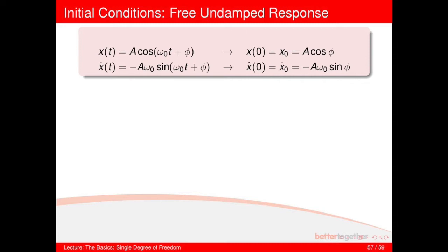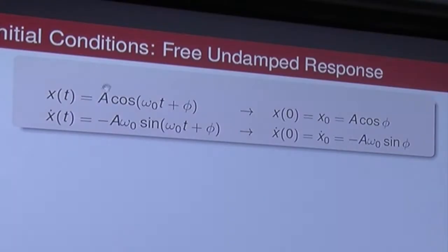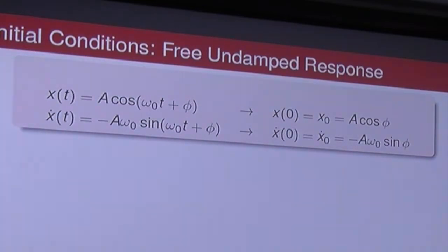In the undamped case, the first equation shown is the general solution where we know neither A nor phi. If you apply the initial condition at time equals zero — which I'll call x subscript zero — you can see quite clearly that you end up with A cosine phi, since the sine term drops to zero.